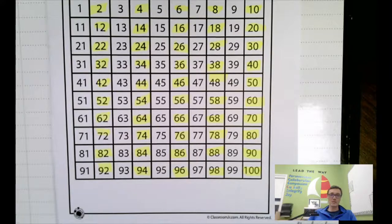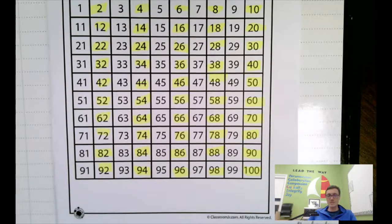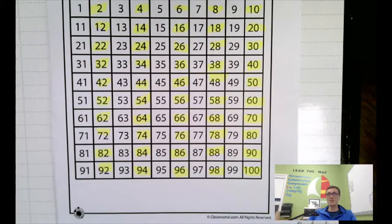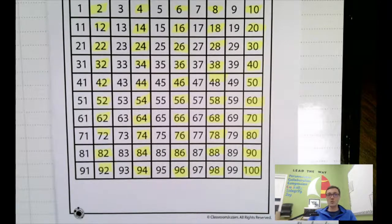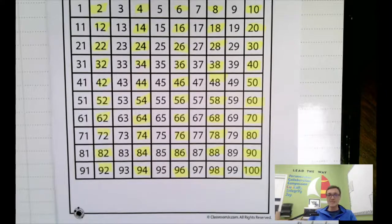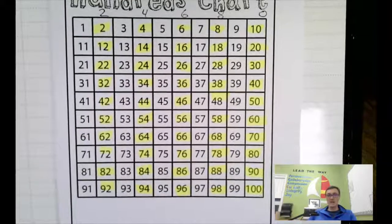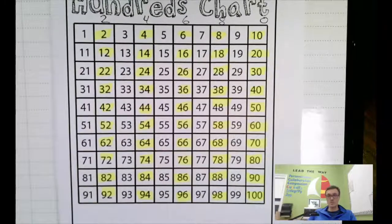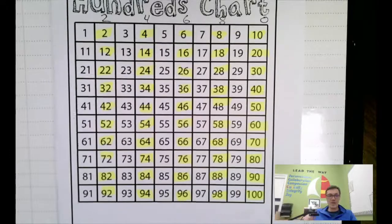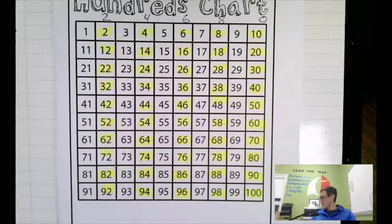48, 46, 44, 42, 40, 38, 36, 34, 32, 30, 28, 26, 24, 22, 20, 18, 16, 14, 12, 10, 8, 6, 4, 2, 0. Blast off. Fantastic.